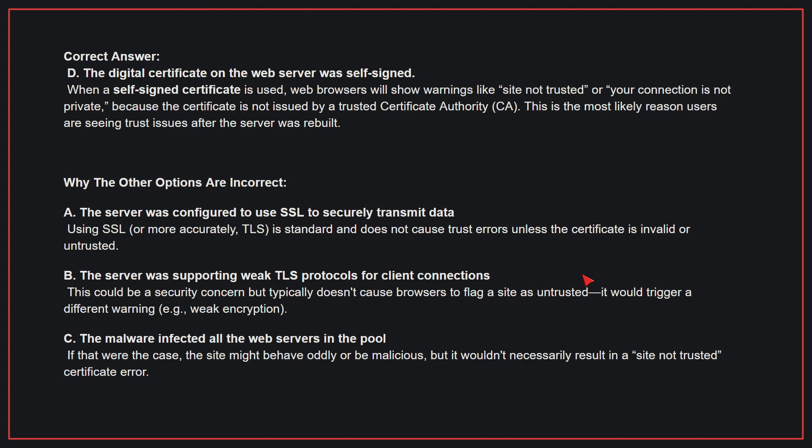Why the other options are incorrect? A: the server was configured to use SSL to securely transmit data — using SSL is standard and does not cause trust errors unless the certificate is invalid or untrusted. B: the server was supporting weak TLS protocols — this could be a security concern but typically doesn't cause browsers to flag a site as untrusted; it would trigger a different warning. C: the malware infected all the web servers in the pool — the site might behave oddly, but it wouldn't necessarily result in a 'site not trusted' certificate error. Therefore, the correct answer is D.